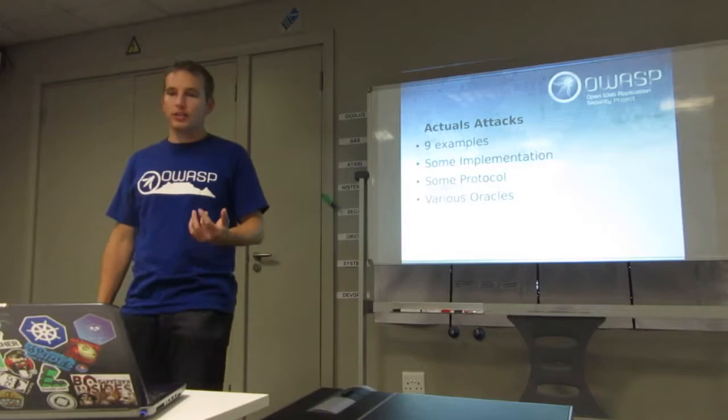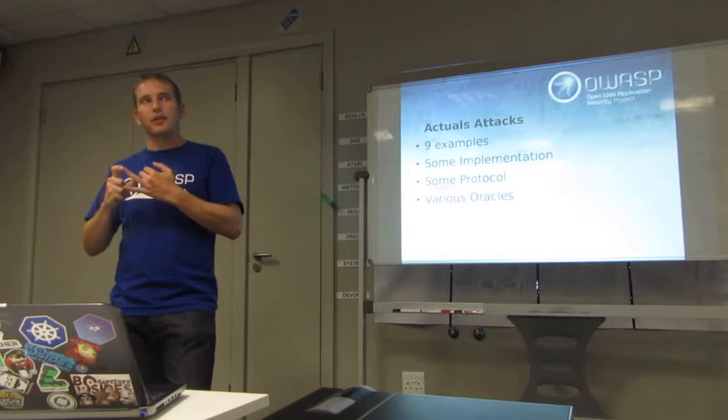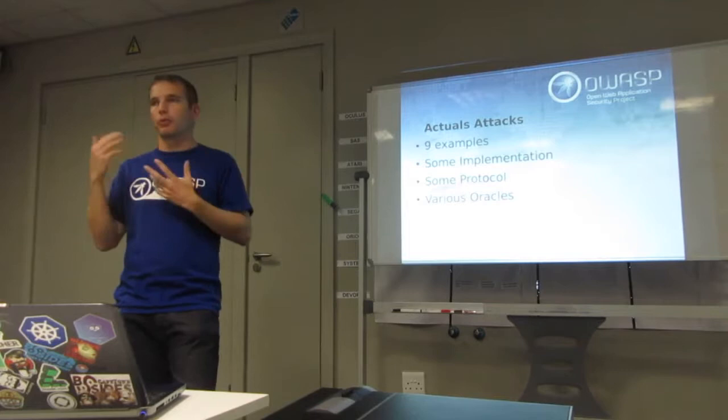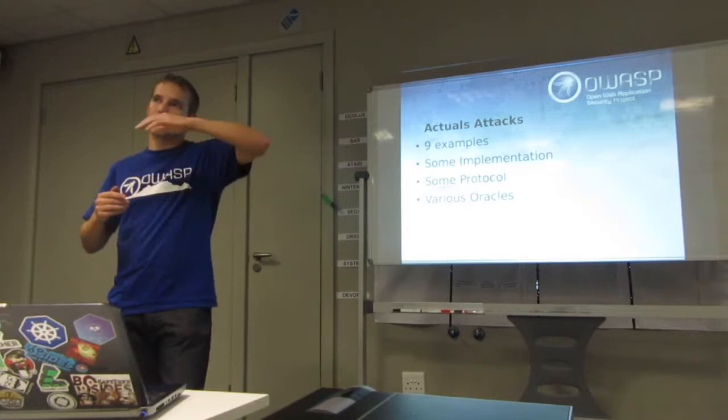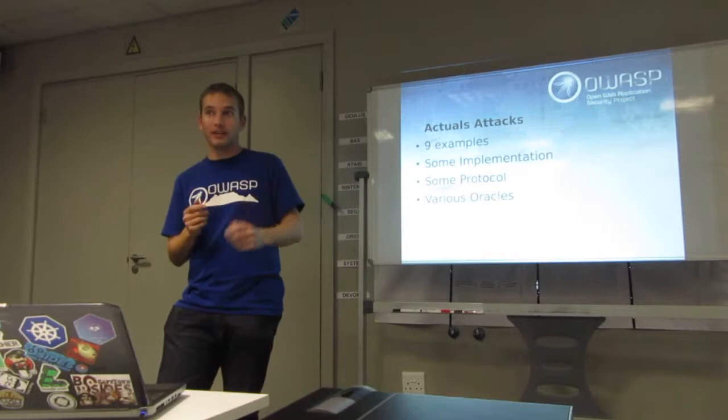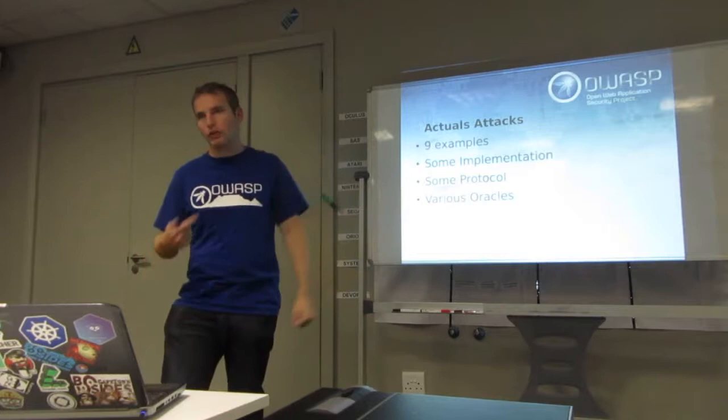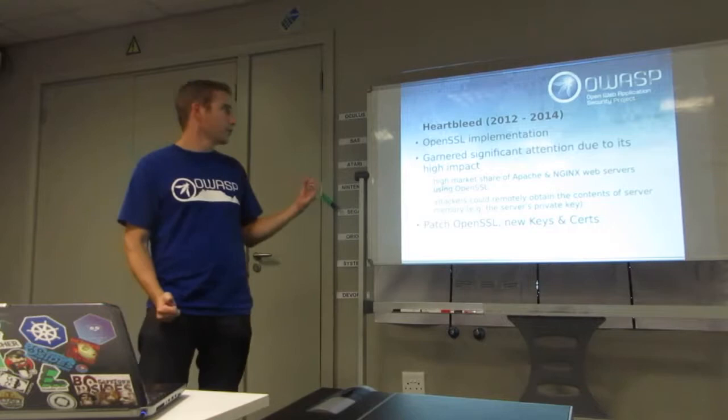So you're going to have nine actual attacks here. Some are implementation problems, some are problems with the protocol. For example, if OpenSSL - they're going to feature a few times here because I'm hard on them - if they make a mistake that's not actually following the specified protocol, that's their fault and not the protocol's fault. And vice versa. Obviously if there's a problem in the protocol, you'll actually see this happening across multiple implementations because they're all following the standard and there's a problem with the specification. And various oracles, like I mentioned, they will be looked at.